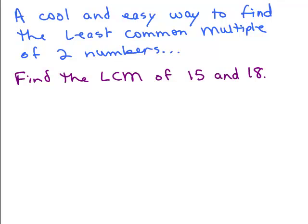This is my third video on how to find the least common multiple of a list of numbers, except in this video I'm going to show you a method if you just need to find the least common multiple of two numbers. For instance, find the least common multiple of 15 and 18.